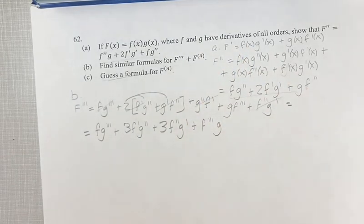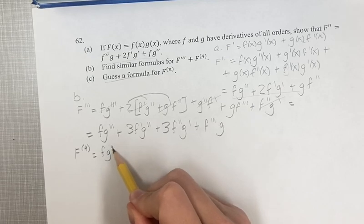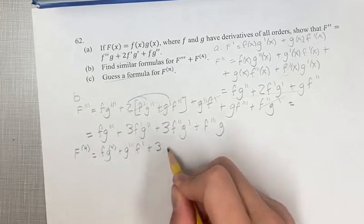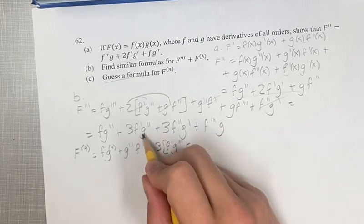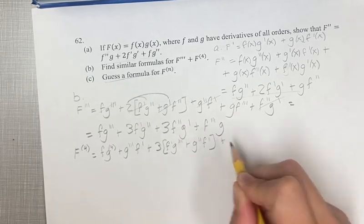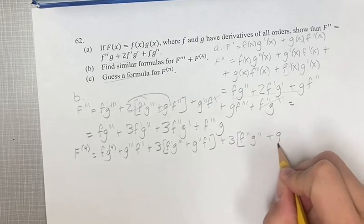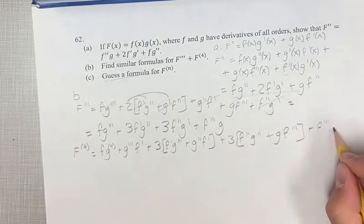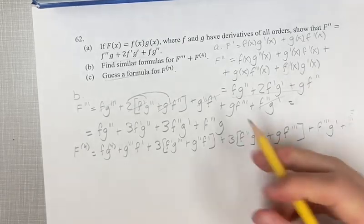Continuing, we have to find the fourth derivative. For the first term, the first times the derivative of the second, plus the second g triple prime times the derivative of the first. Plus three: for this we have the first f prime times the derivative of the second g triple prime, plus the second g double prime times the derivative of the first. Plus three: the first times the derivative of the second g double prime, plus the second times the derivative of the first f triple prime. And for this last term, the first times the derivative of the second, plus the second times the derivative of the first.